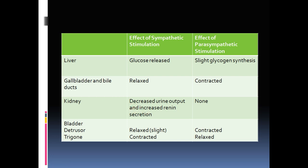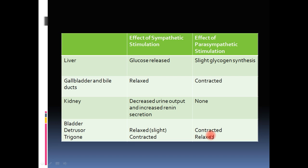In the kidney, the sympathetic system decreases urine output and increases renin secretion, restricting excretion of sodium and water. The parasympathetic system has no significant effect on the kidney. In the urinary bladder, sympathetic stimulation relaxes the detrusor and contracts the trigone, keeping bladder contents inside and preventing micturition. Parasympathetic stimulation contracts the detrusor and relaxes the trigone, initiating the micturition reflex.